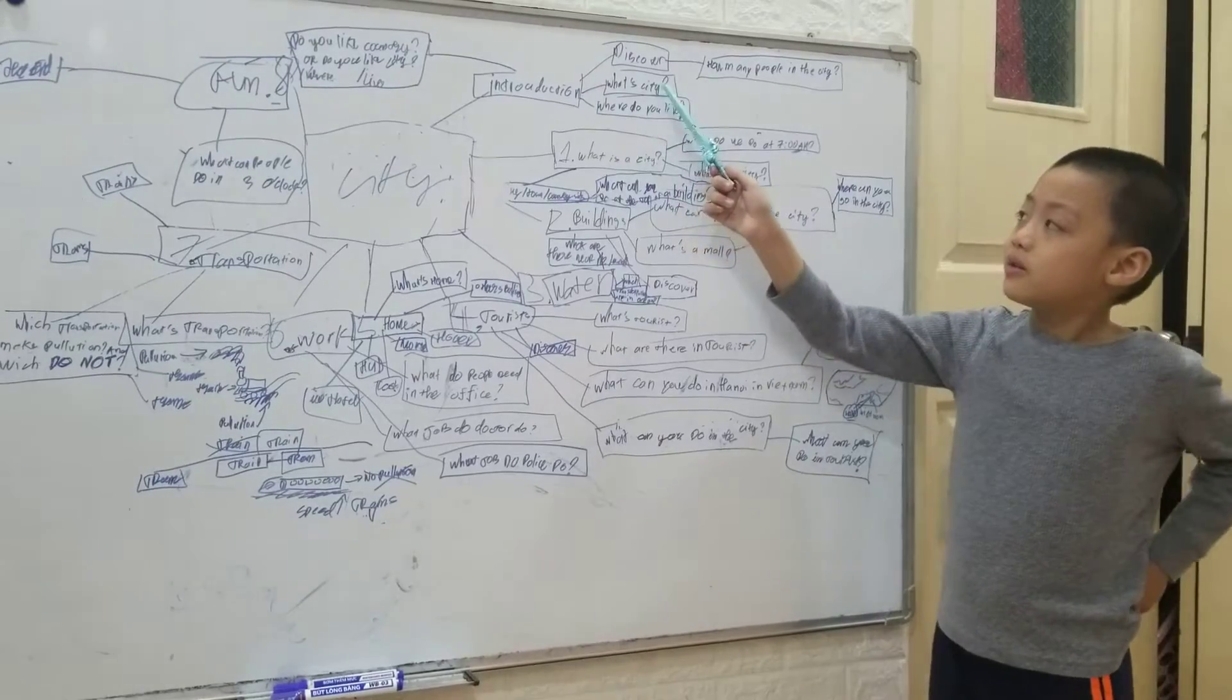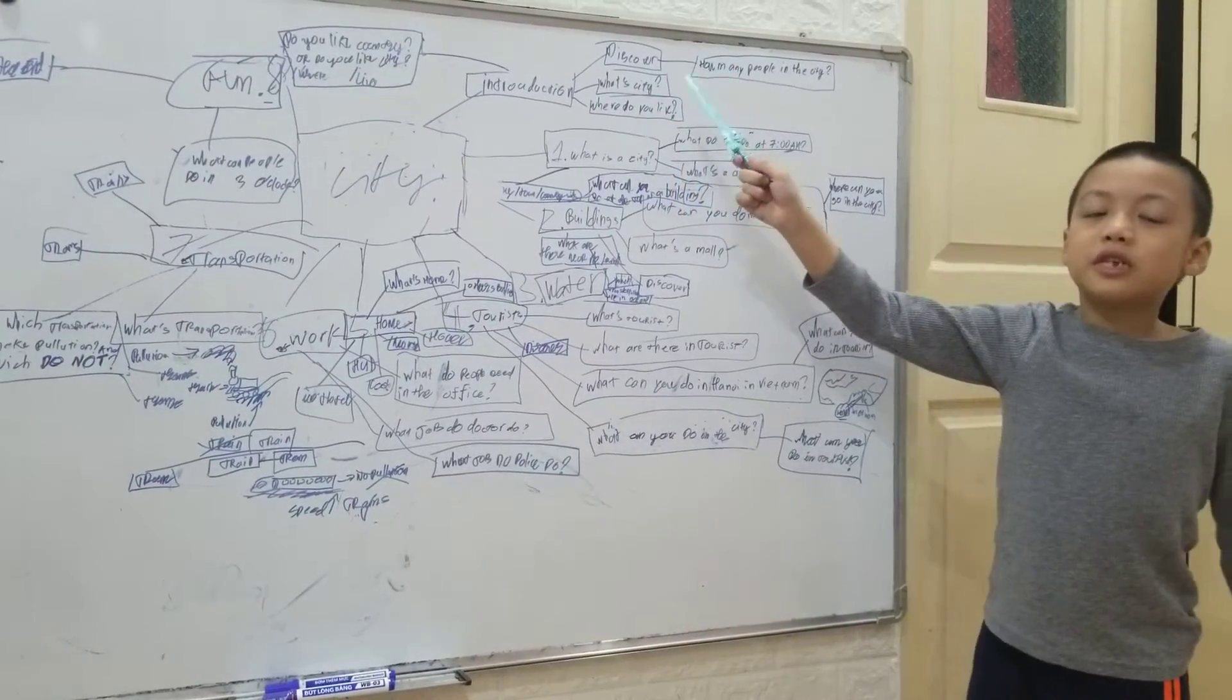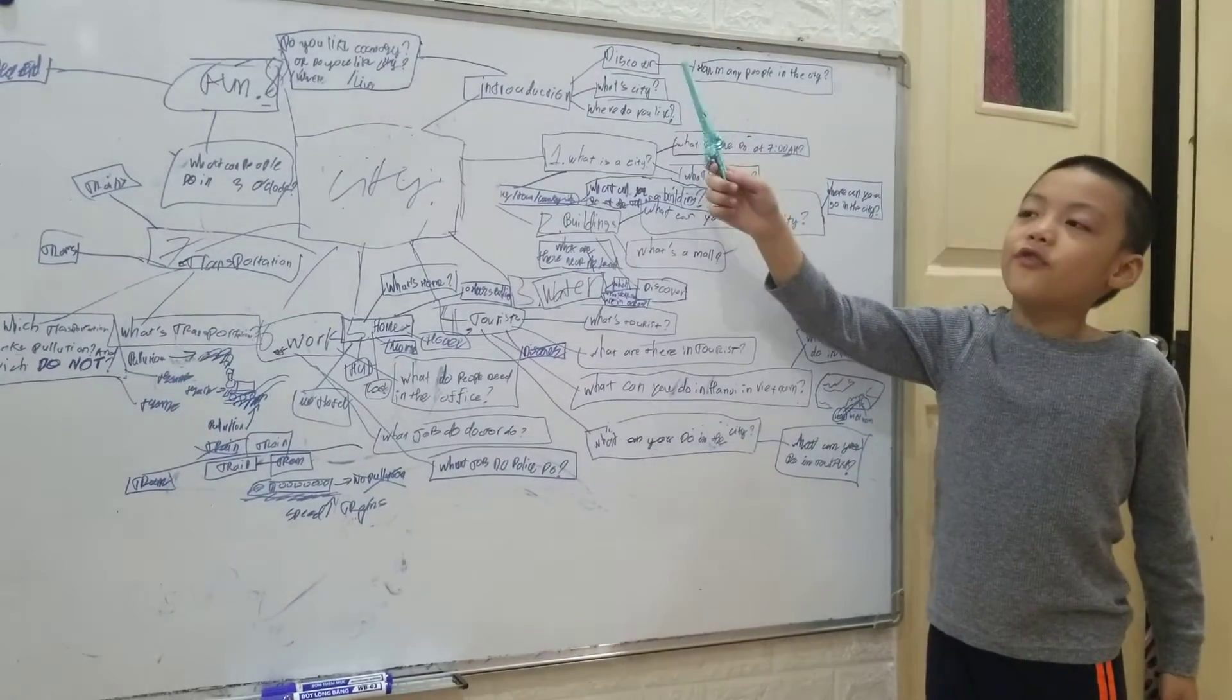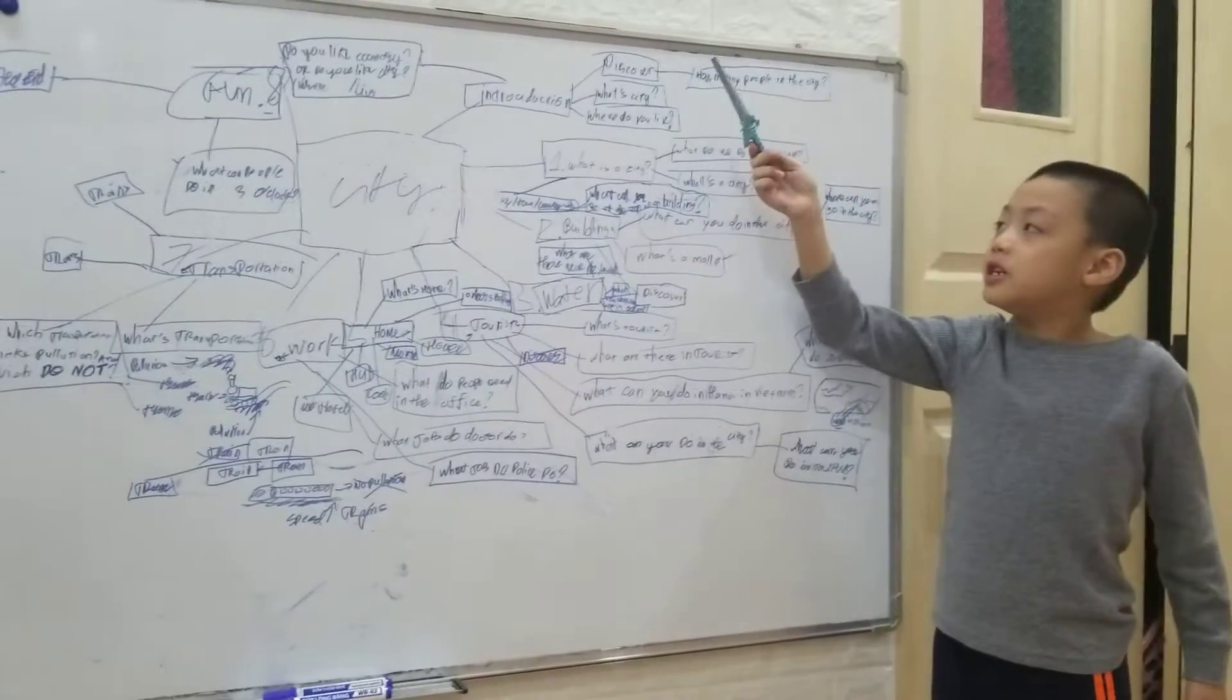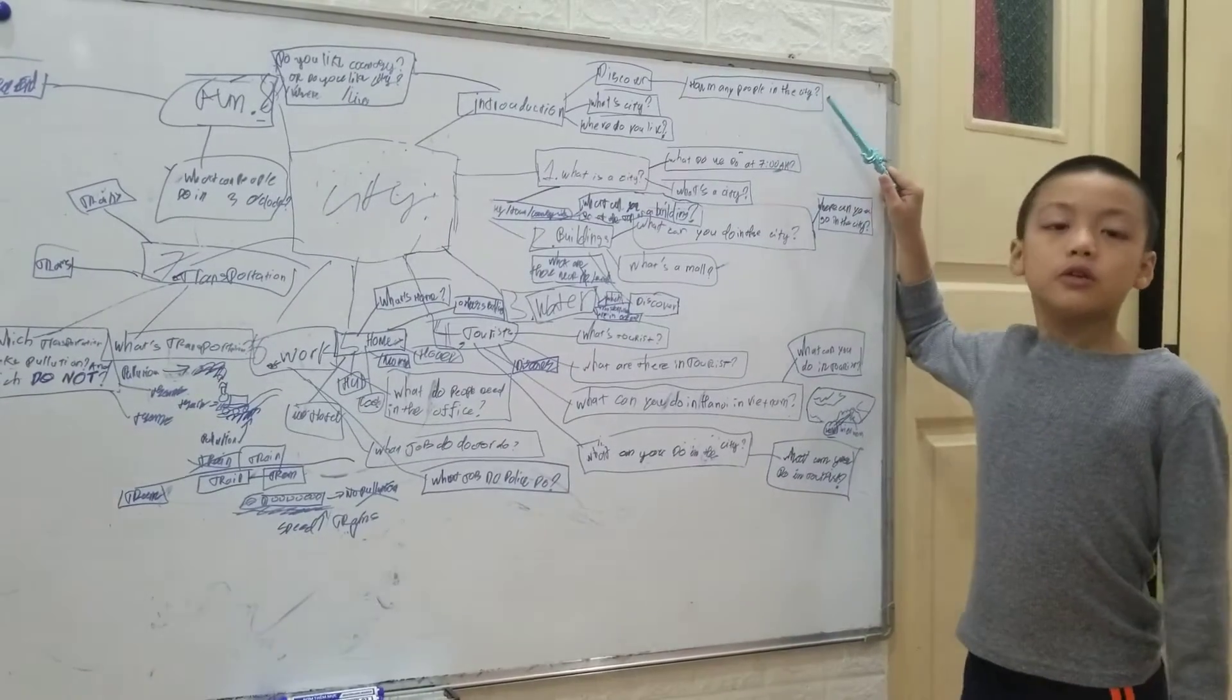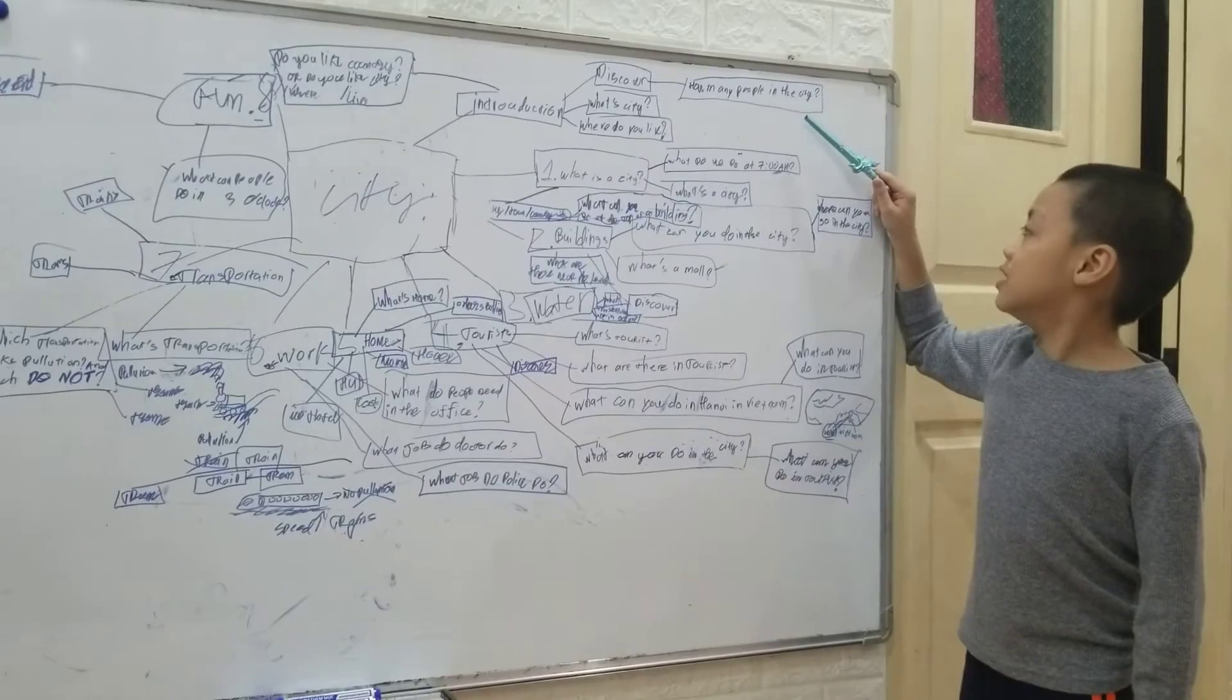Some cities have over 15 million people in them. And sometimes there's about 7 billion people living in cities.